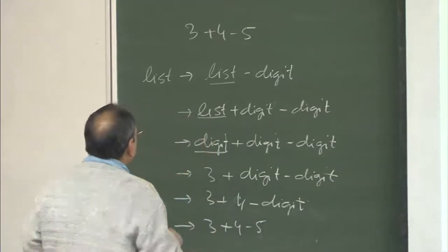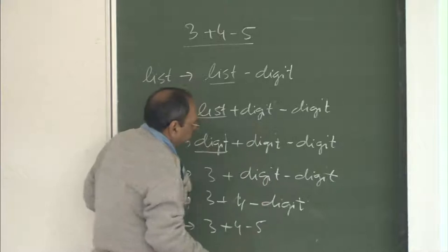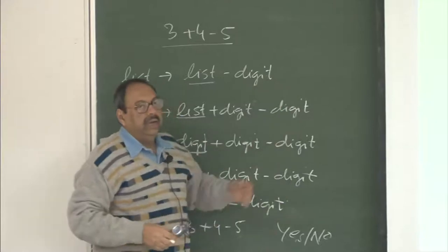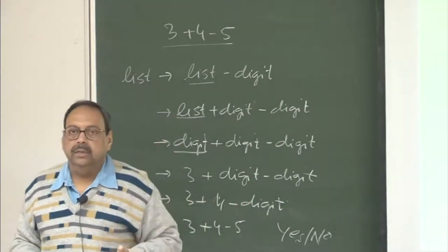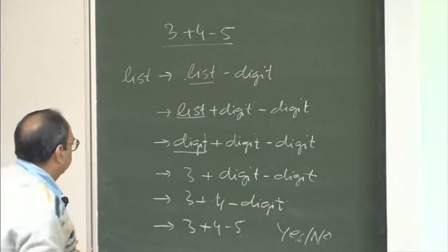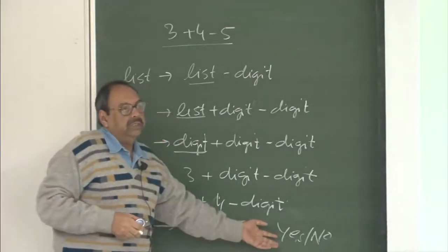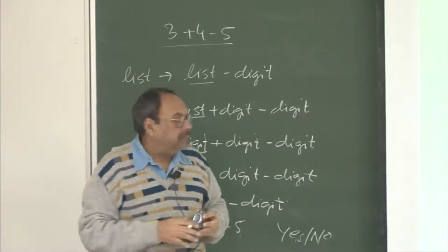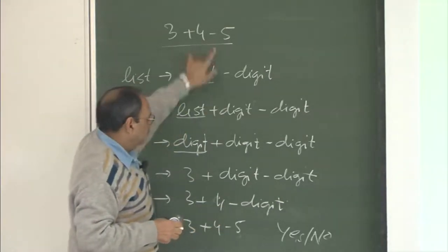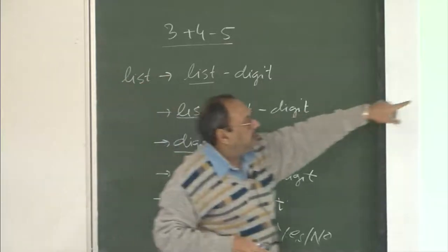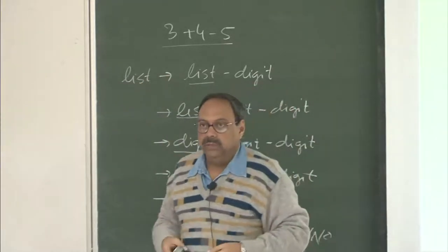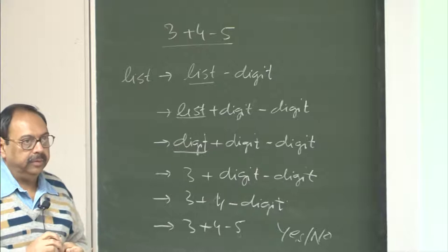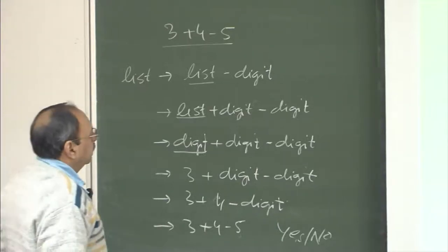Now for the process of parsing, it is very important that not only we give a yes or no answer, because it is possible that at some point I picked up either the wrong symbol or the wrong production. Then it is possible that although this is a valid string, I would not have reached that conclusion. So it is important to know which symbol to pick up and which production to pick up. Just giving the answer that this string belongs to the language is not sufficient. The whole process of parsing is about picking up the order and picking up the right production.